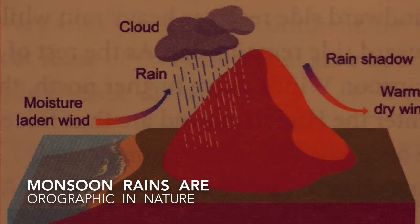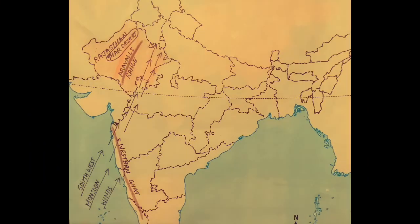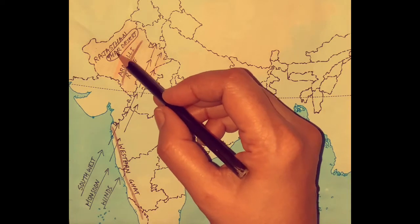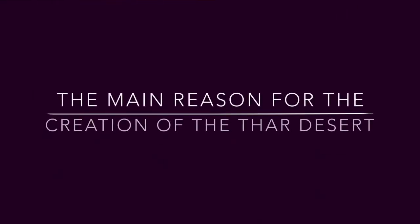Condensation occurs, bringing rains to east and north India. Thus, the monsoon rains are mainly orographic in nature. If it were not for orographic lifting, India would not have received rain from the monsoon winds.